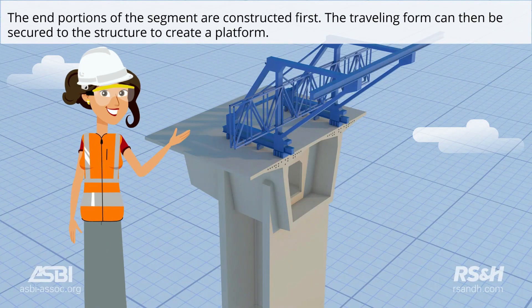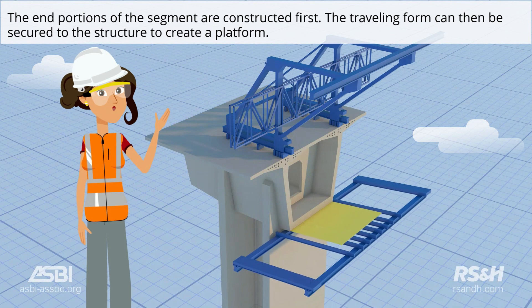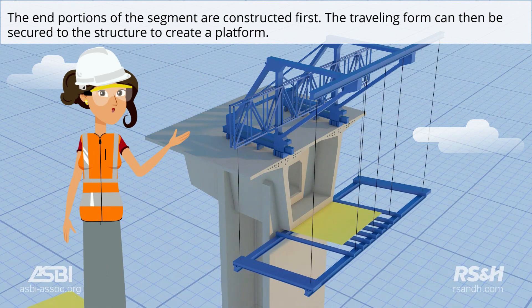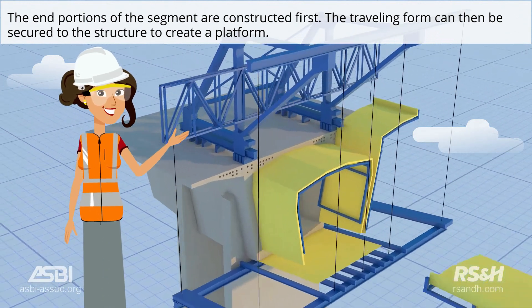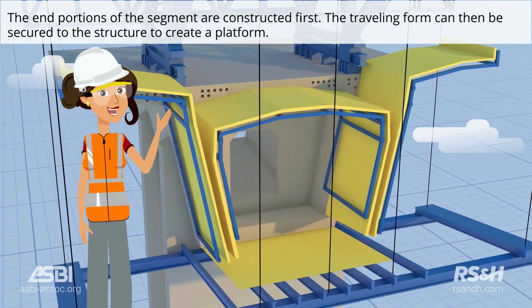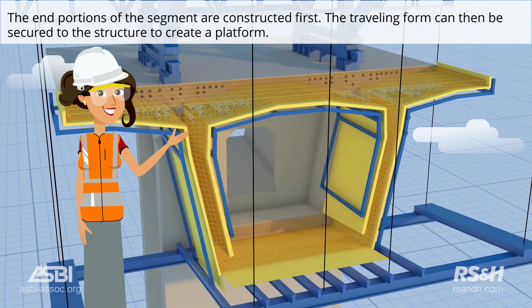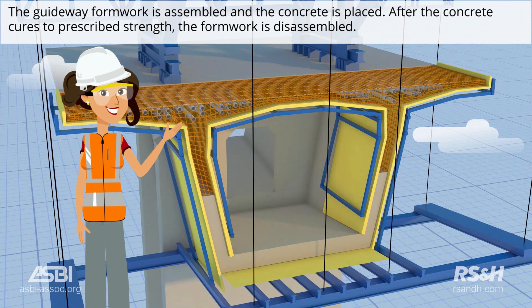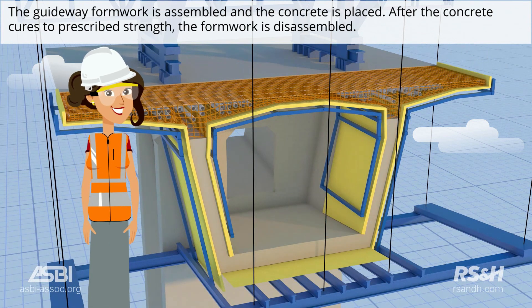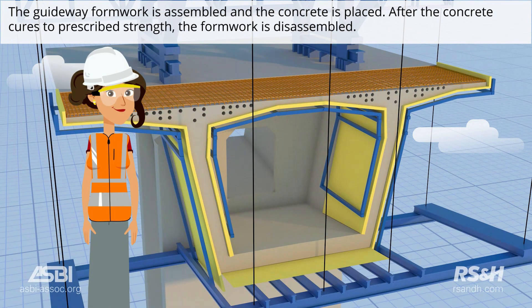The end portions of the segment are constructed first. The traveling form can then be secured to the structure to create a platform. The guideway formwork is assembled and the concrete is placed. After the concrete cures to prescribed strength, the formwork is disassembled.